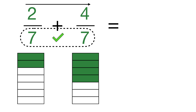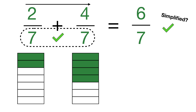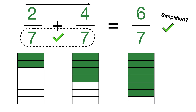Step 2 is we're going to add the numerators across the top. 2 plus 4 gives us 6. Step 3, we just keep the denominator the same — we've been using 7, so we keep that. Now we have 6/7. Step 4: is this fully simplified? 6 and 7 share no common multiples, so this is fully simplified. 2/7 plus 4/7 equals 6/7, and there is a visual representation of 6/7.